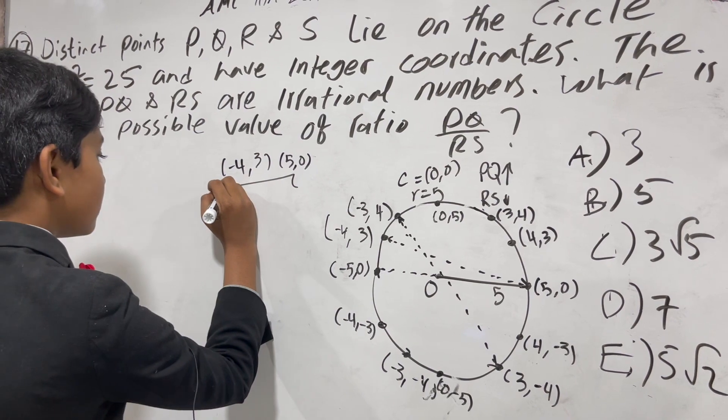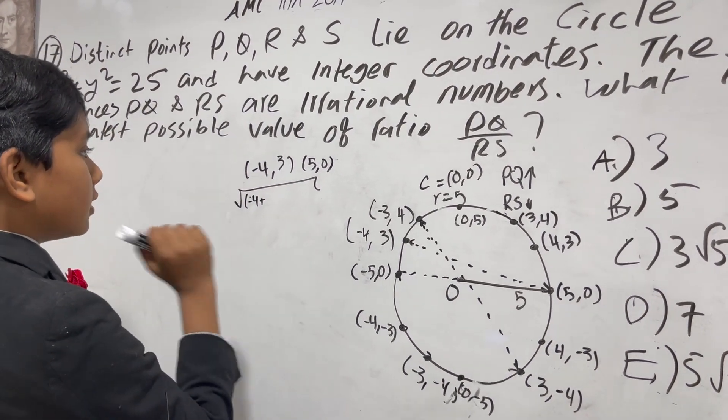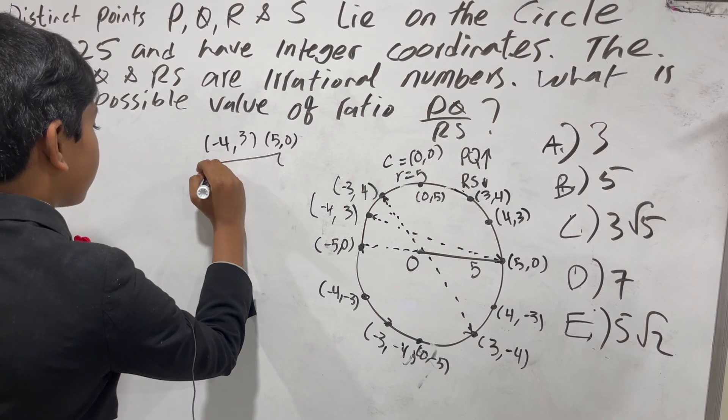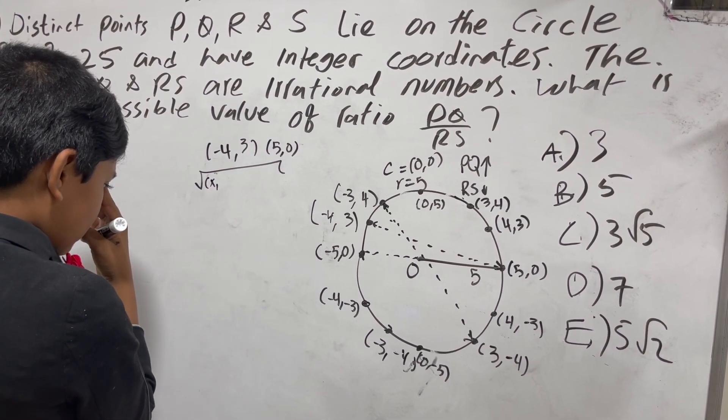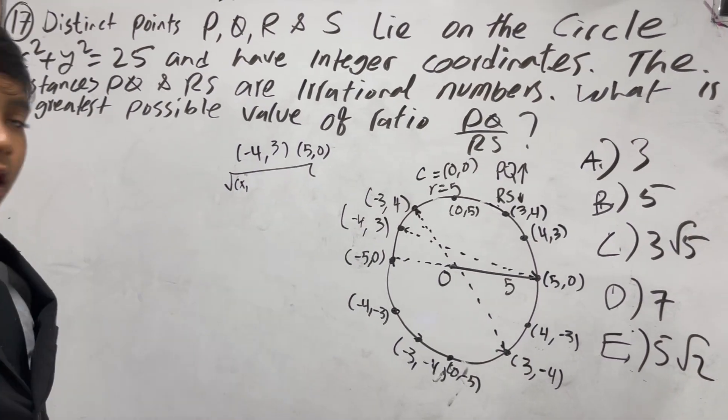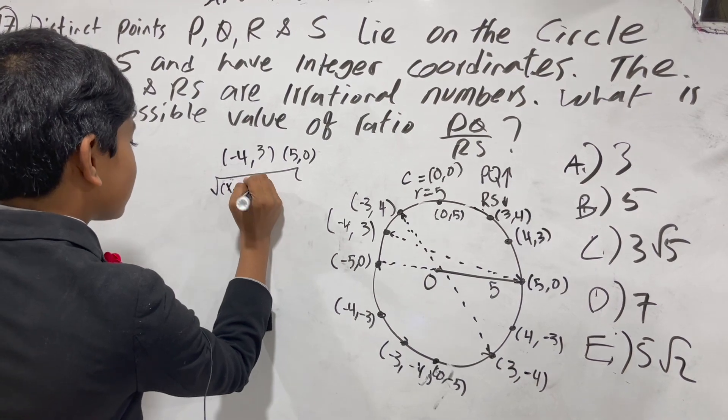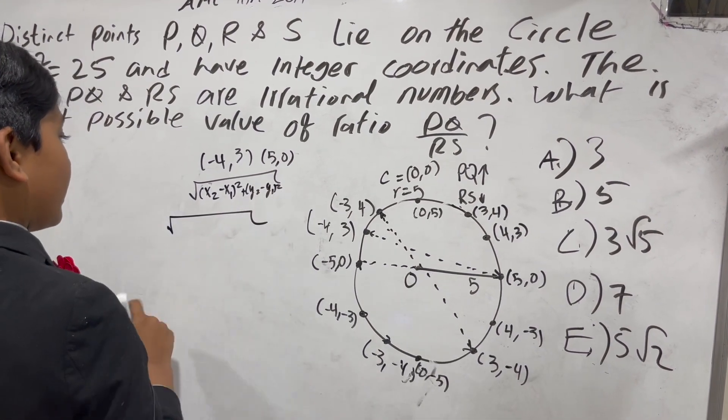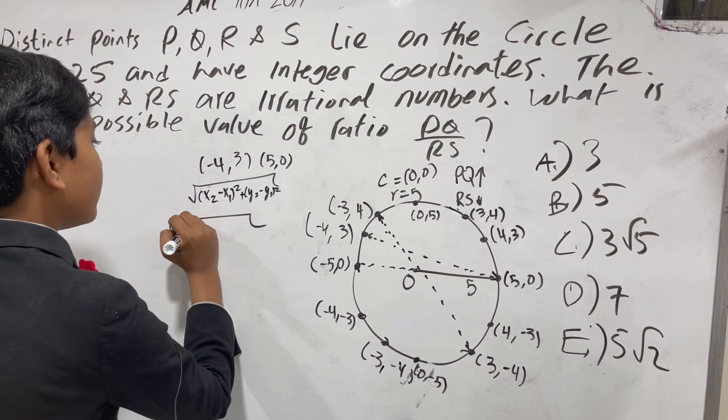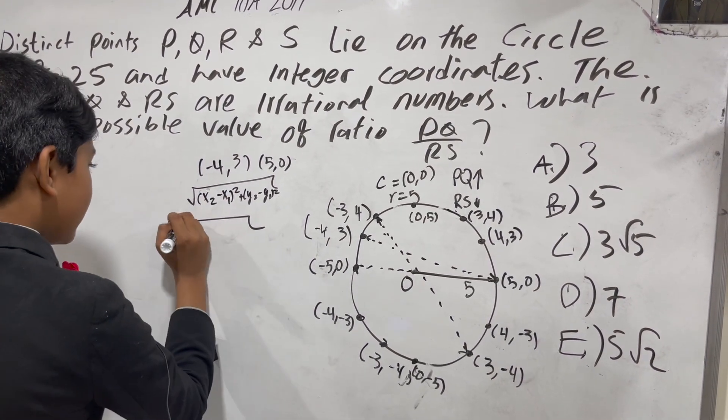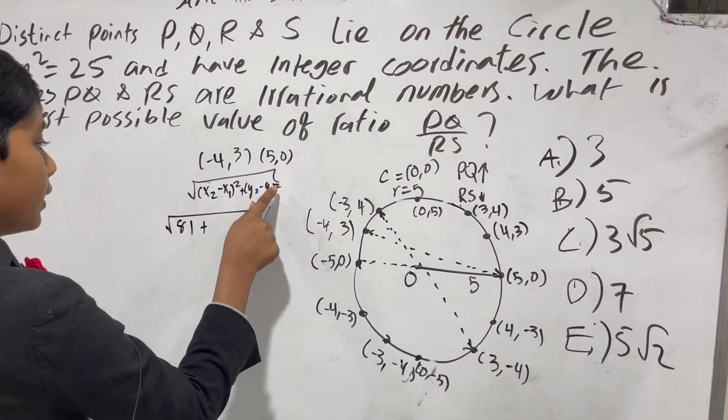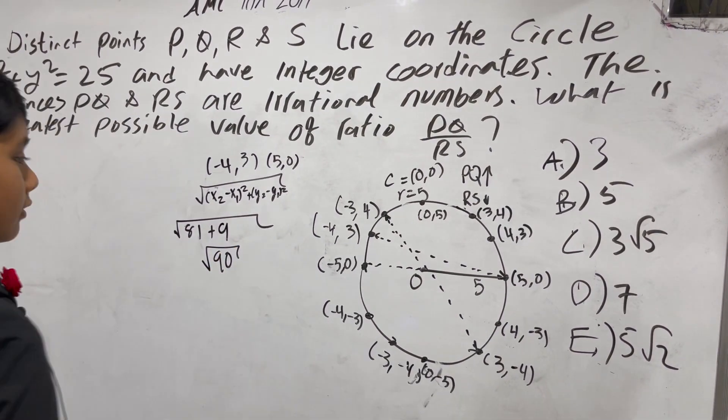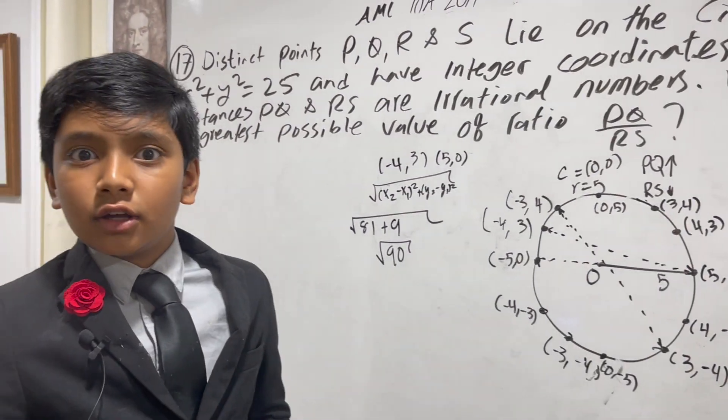The distance formula is the square root of x2 minus x1 squared plus y2 minus y1 squared. Okay, x2 is 5, x1 is -4, so that's 9 squared is 81. y2 is 0, y1 is 3, negative 3 squared is positive 9. So this gives us the square root of 90, which is high sure, but it's not the highest we can go.